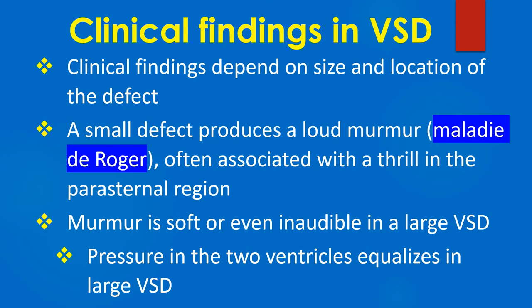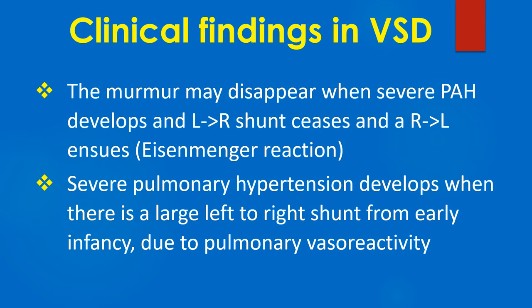Clinical findings in VSD depend on size and location of the defect. A small defect produces a loud murmur — Maladie de Roger — often associated with a thrill in the parasternal region. Murmur is soft or even inaudible in a large VSD, because the pressure in the two ventricles equalizes. The murmur may disappear when severe pulmonary hypertension develops and the left-to-right shunt ceases and a right-to-left shunt ensues. This is known as Eisenmenger reaction.